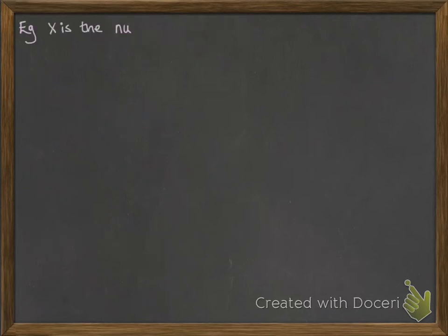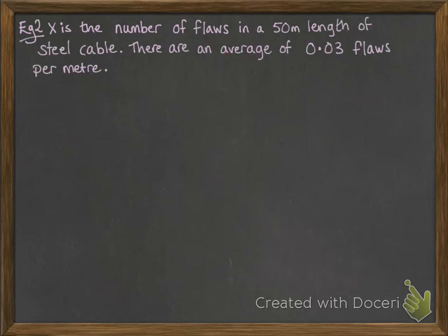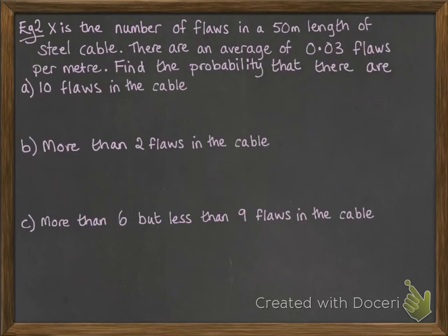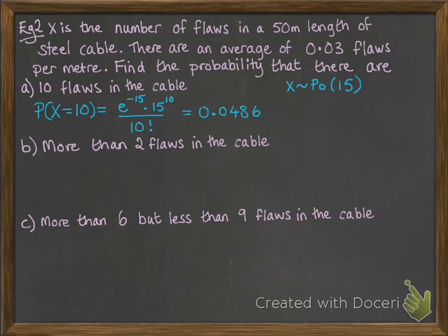All right, more contextual example. We'll go back to those flaws in the steel cable again. So we are going to work out the following probabilities. We know that x follows a Poisson distribution with a mean of 15, and we saw that on the first slide. We're going to work out the probability that there are 10 flaws in the cable, so we put 10 and 15 into our formula for x and lambda, and work out what that would be.